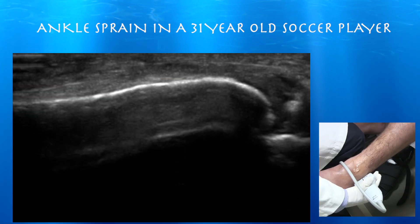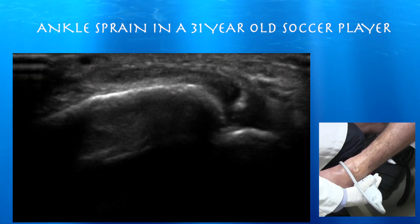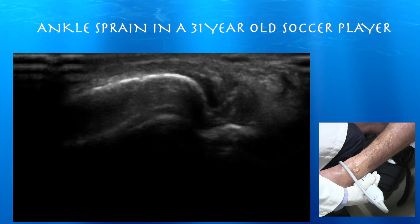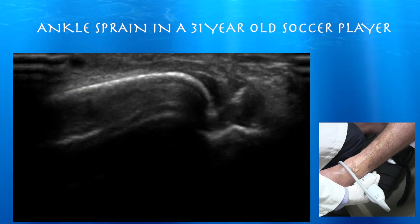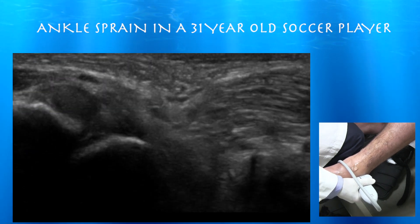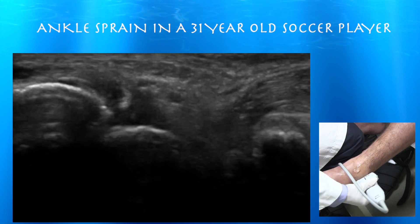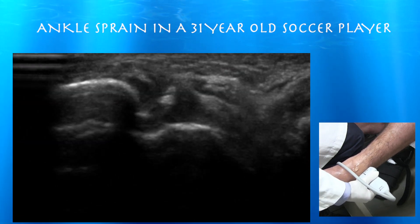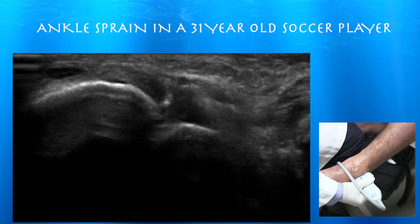Here is the fibula, and on the ultrasound you can see a little speck of calcification — much clearer than on this x-ray. Here again is this calcification from an avulsion from the distal fibula. You don't really see any ATFL; you just see some hypoechoic signal in the region where you would expect the ATFL. It's had injuries in the past and is barely visible on x-ray. So this is a case where ultrasound clarifies your x-ray.